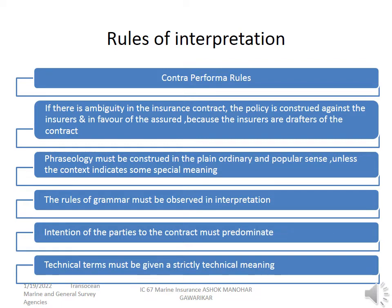Foremost rule: whenever there is an error in the policy, you should not be punishing the insured for that. For example, in the proposal form, somebody is saying they want their policy up to Dubai, up to FOB point. But by error or by mistake, if you write port only, and then the damages are during loading, it is only up to port. So whose mistake is it? He has given it in the proposal form, but the drafter has made the mistake. So the benefit of doubt should be given to the insured.